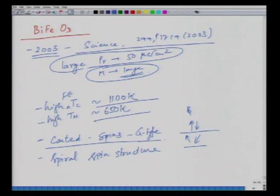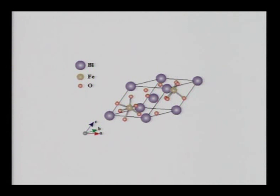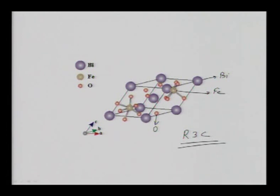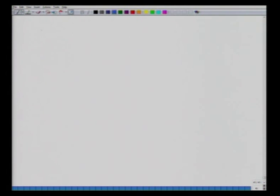The spiral spin structure can be broken down by some methods. The material has a rhombohedral structure. In this structure, the larger atoms are bismuth ions, the middle-sized are iron ions, and the smallest are oxygen atoms. The space group is R3c, and the structure transforms to a high-symmetry phase above the Curie temperature.